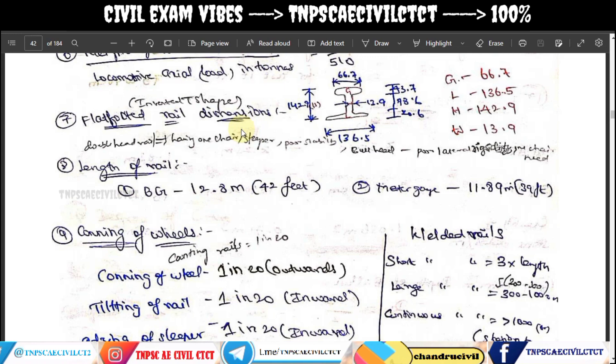Flat-footed rails have a specific shape. It is an inverted T shape — not an I shape, but an inverted T shape. The lower width is the same across the foot, and the gauge face is at the top.